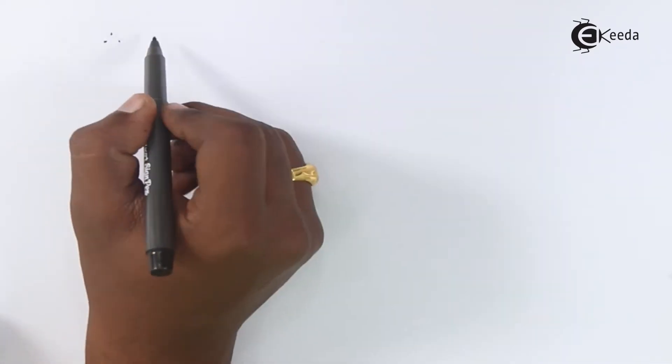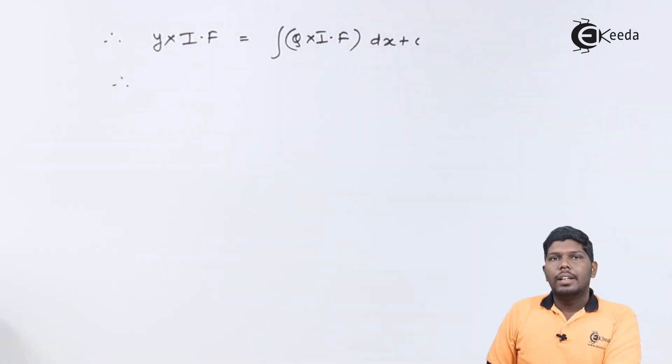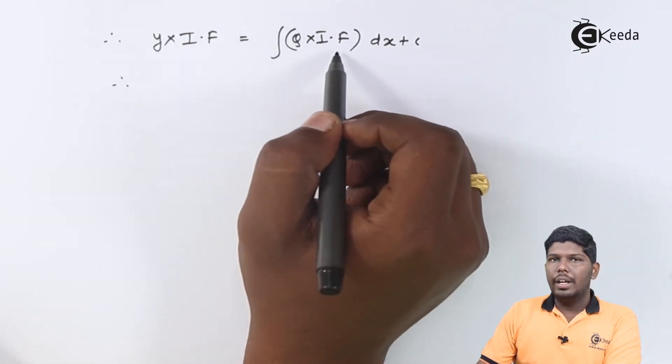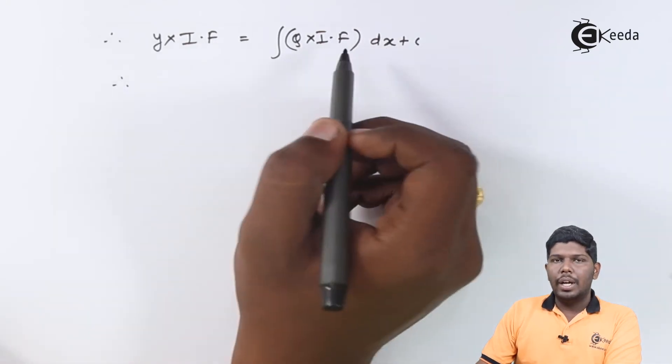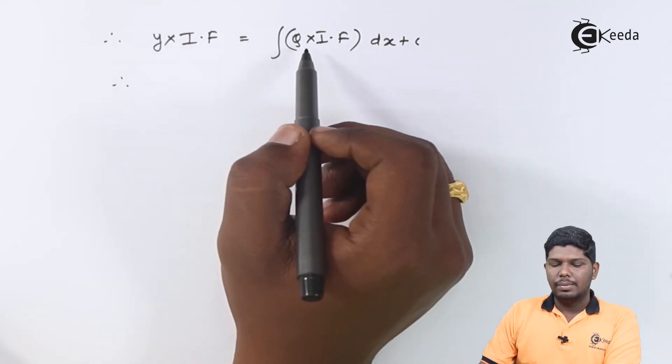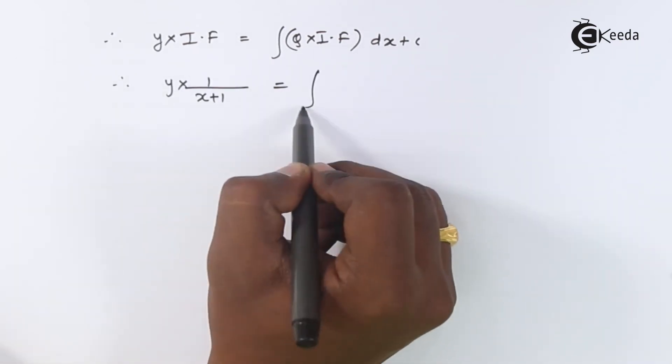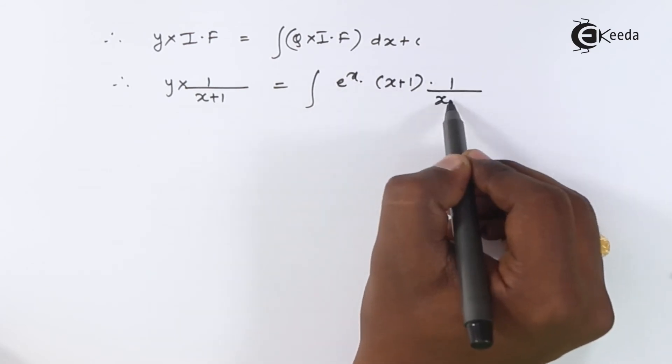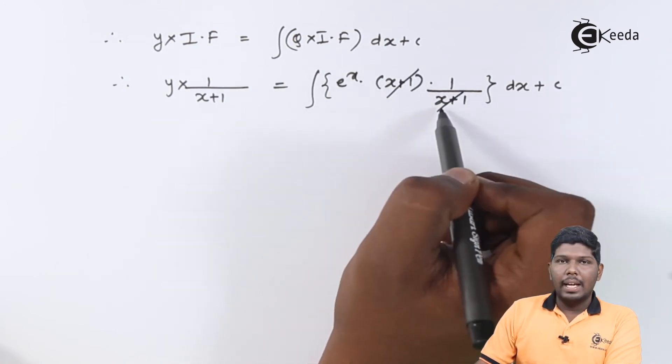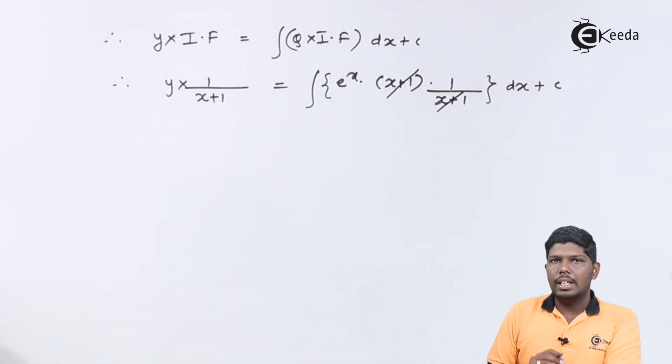Now let us find the solution. The solution is given by y × integrating factor = ∫(q × integrating factor) + c. Let us substitute integrating factor which is 1/(x+1) and the value of q that is e^x(x+1). On doing so, (x+1) will be cancelled and we have ∫e^x dx left. We know that integration of e^x is e^x only.